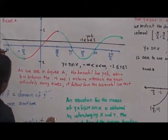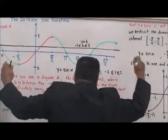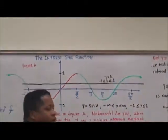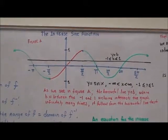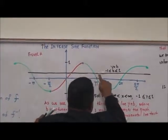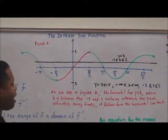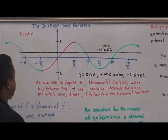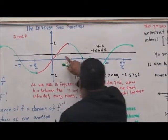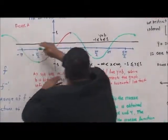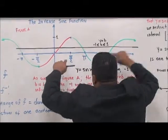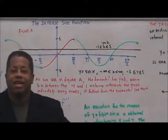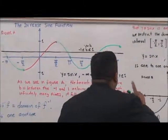As we draw the horizontal line from negative infinity to positive infinity, it hits the graph infinitely many times — you remember the horizontal line test from earlier courses. Because of this, y equals sine x is not one-to-one.